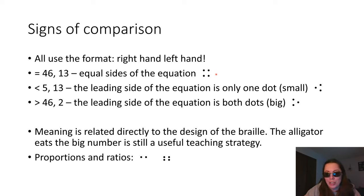For our greater than sign, the leading side is going to be larger. So we'll put our dot 4, 6, our bigger dots toward the bigger number, and then on the second side of the equation using our left hand. Remember, we're going to go right-left for all of these signs of comparison. The second side would be just the dot 2, the smaller number of dots by the smaller number.